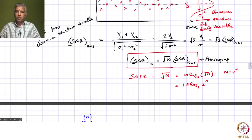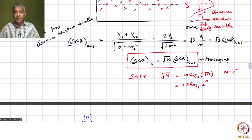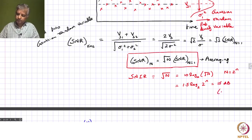Let us do a quick calculation. Say N = 1024, so √N ≈ 32, and 10 * log_base10(32) ≈ 15 dB. Since 1024 = 2^10, small n = 10, and substituting into the expression 1.5n gives 15 dB — consistent with the direct calculation. So the SNIR for 1024 averages is about 15 dB.